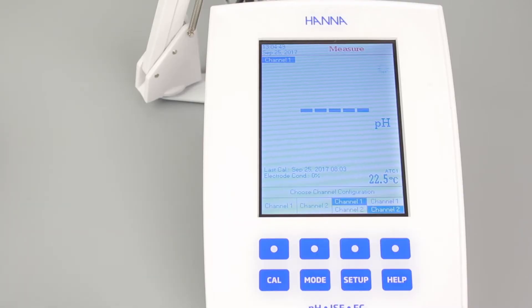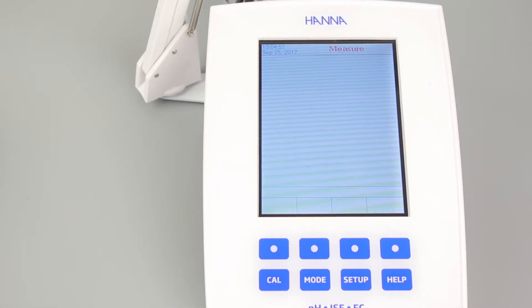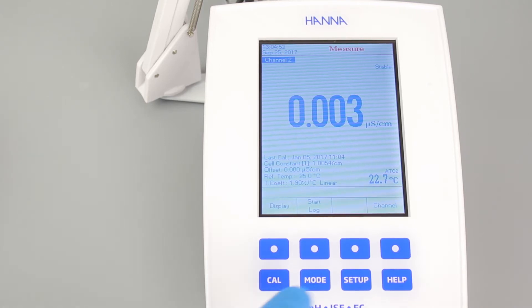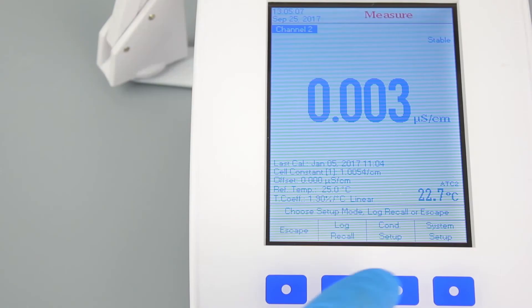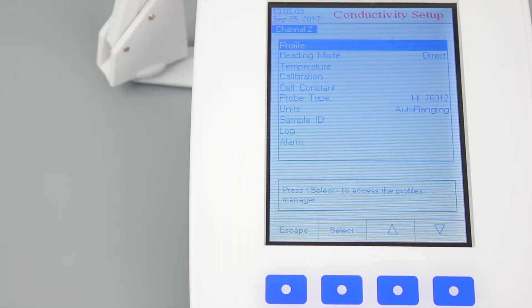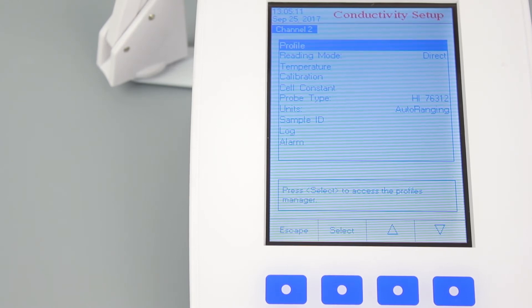You can also view the conductivity setup by selecting the appropriate channel and going into the setup. You will find everything you need to customize your measurements here. With all the options to choose from, I really recommend going through each setting to determine what will be best for you. Once complete, you are ready to begin calibrating your meter.